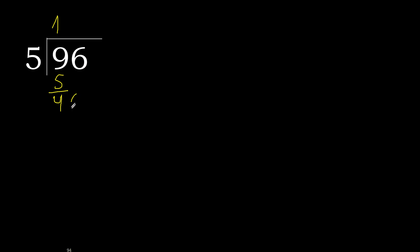Next, bring down: 46. 5 multiplied by 9 is 45 — 45 is not greater than 46. 46 minus 45 is 1.